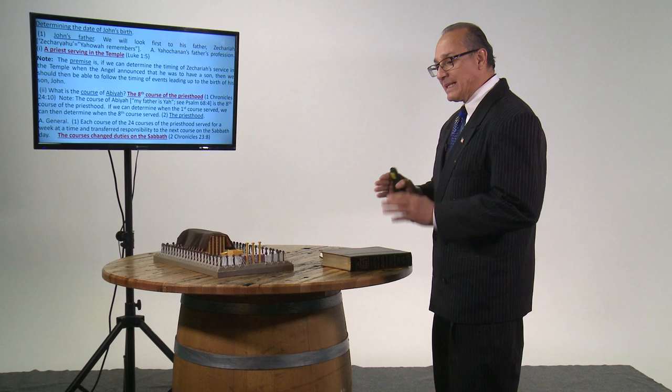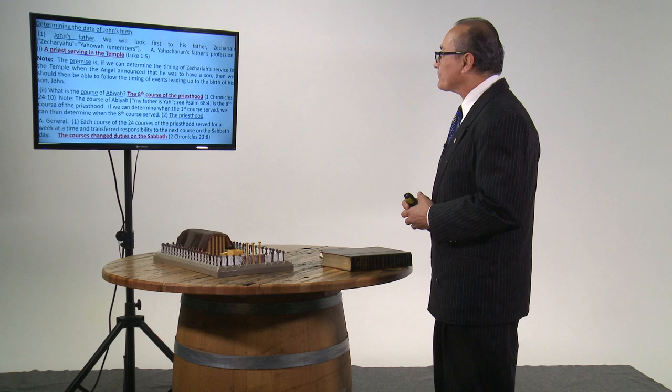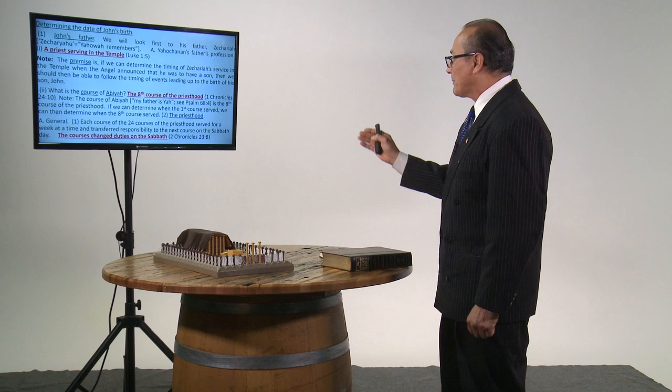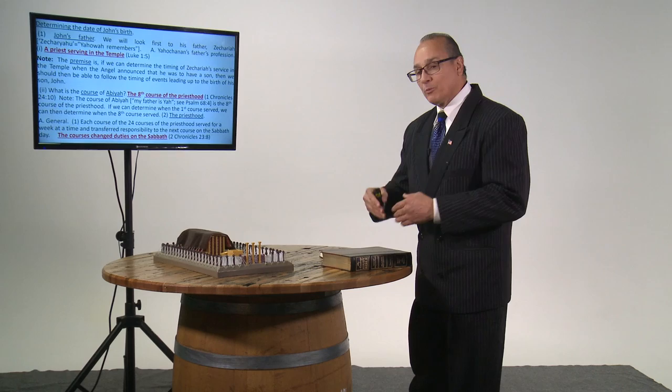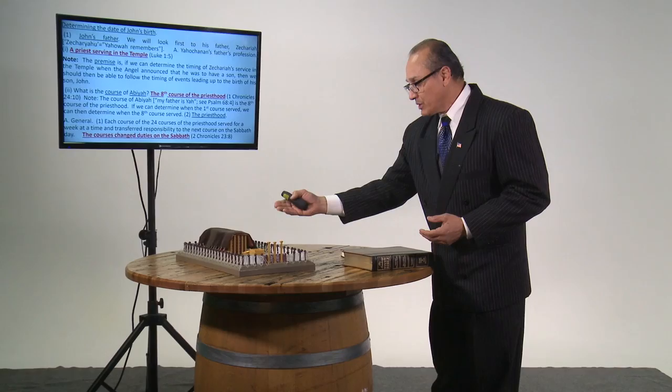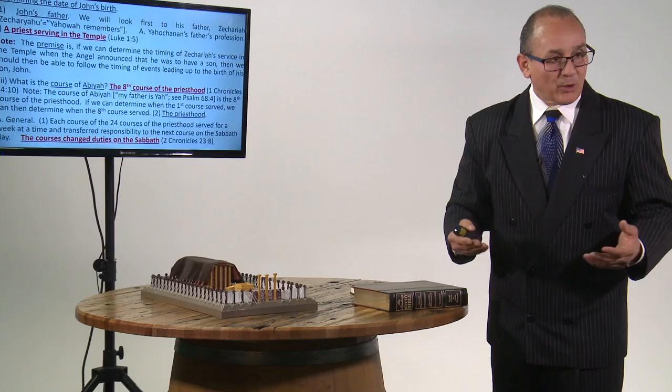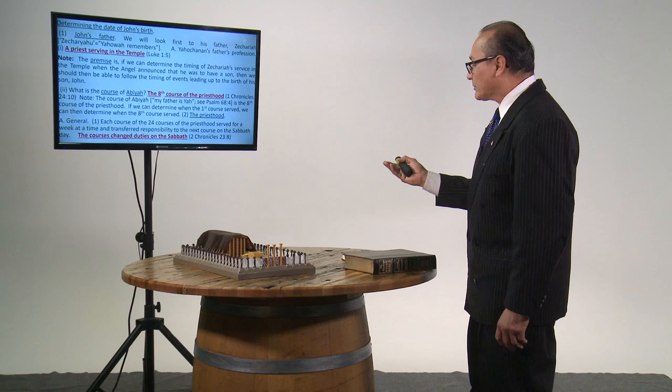Zechariah was a priest who served in the temple, Luke 1:5. The promise is if we can determine the timing of Zechariah's service in the temple when the angel announced that he was to have a son, then we should be able to follow the timing of events leading up to the birth of his son, John. What is the course? A course is a week that the priest works inside the sanctuary. When you read the word course in your Bibles, it means a week that you're determined to work inside the sanctuary of Abijah, the eighth course of the priesthood, 1 Chronicles 24:10. The course of Abijah, 'my father is Yah,' is the eighth course of the priesthood.